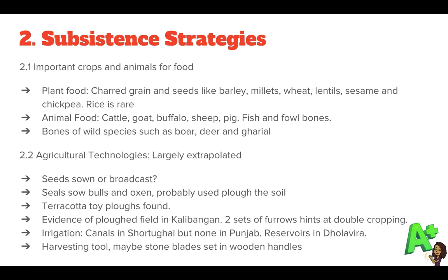Regarding animal food, archaeozoologists tell us they have found bones of cattle, goat, buffalo, sheep, pig, fish and fowl. They've also found bones of wild species such as boar, deer and gharial. We can tell these may have been used for food because archaeozoologists look at cut marks on the bones, which gives a hint as to whether these animals were eaten or just hunted for sport.